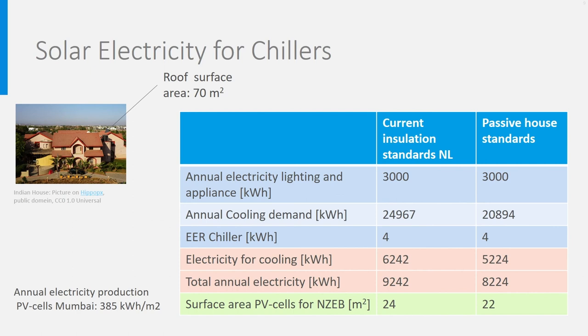We now want to place PV cells on the roof. Modern PV cells have an electrical annual production of 385 kWh per square meter in Mumbai. This is really much more than in the Netherlands. So, in the well insulated version, we need 24 square meter PV cells and in the passive house version, a bit more than 22 square meter, which is really very well feasible.